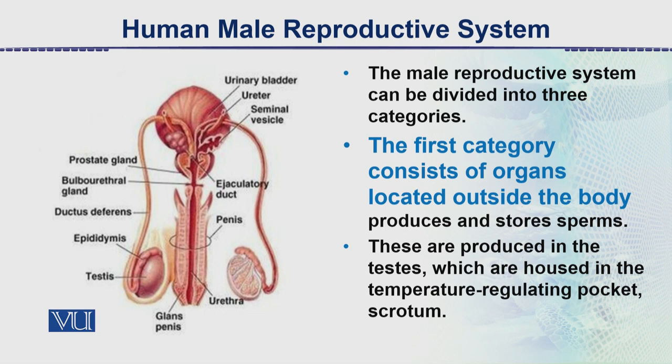The testes are oval-shaped structures present in an out-pocketing of the skin which we call the scrotum. In the newborn male baby, the scrotal sac is empty, but later on — within a few days or at the time of birth — the testes descend down from inside to complete the reproductive organ structure.